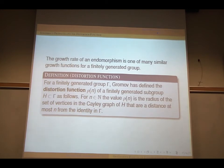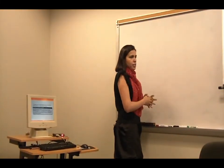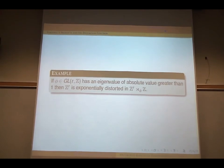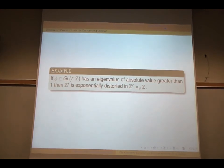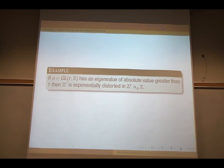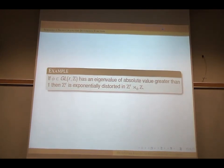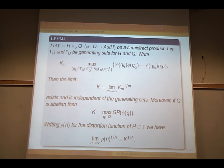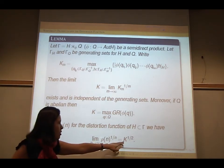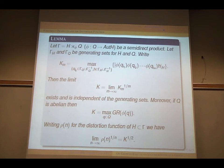If you draw the Cayley graph of gamma, depending on how H sits inside it, you take this rate. The simplest example is that if phi in GL(n,Z) has an eigenvalue of absolute value greater than one, then Z^n is exponentially distorted in the semi-direct product of Z^n and Z. After this definition, we have a result that connects the growth rate of the endomorphism and the distortion of H.